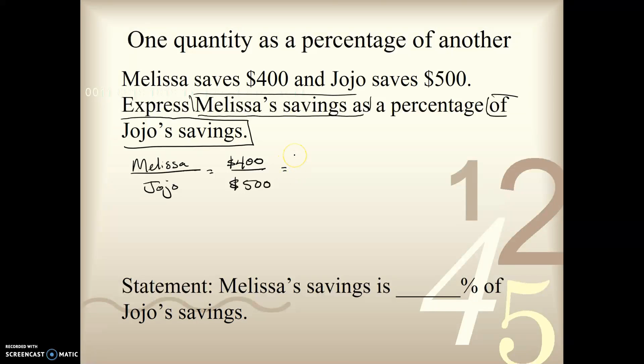Let's divide both by 5 over 5 and use method 1 to get that denominator to 100. So if I divide 500 by 5, I get 100. 400 divided by 5 is going to be 80. And the answer is 80%. So Melissa's savings is 80% of JoJo's savings.